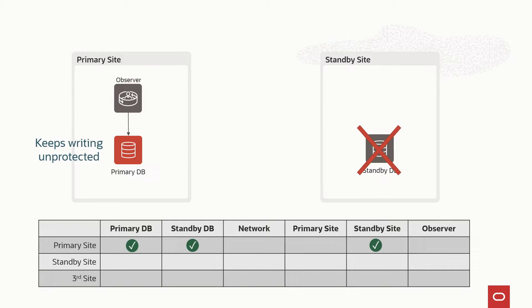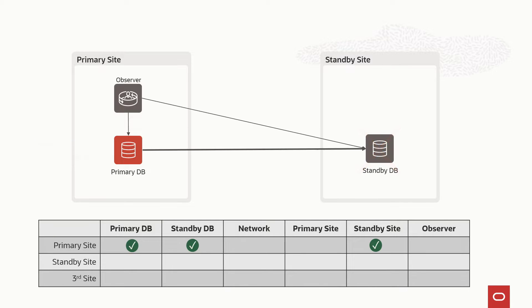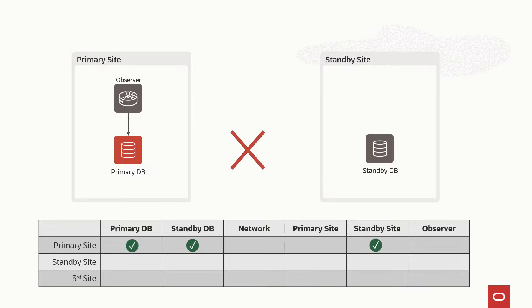This is true regardless of whether we lose the standby database or the full standby site. If we lose the network between the primary and the standby site, we have a similar situation — the primary database has connection with the observer and will keep writing without the protection of the standby database.